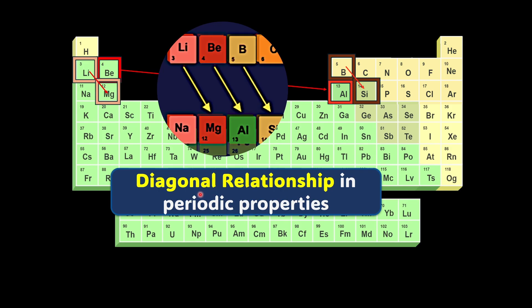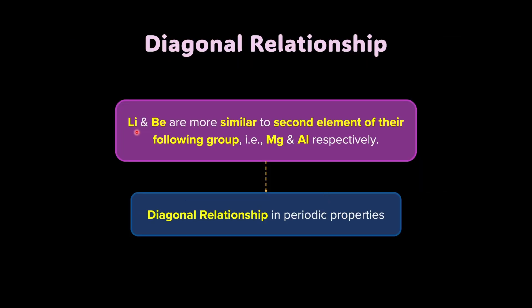So, how can we define this diagonal relationship? Like we just observed, lithium and beryllium are more similar to second element of their following group, that is magnesium and aluminium respectively. So, lithium is more like magnesium, beryllium, like aluminium and so forth. And this is what we refer to as diagonal relationship in periodic properties.